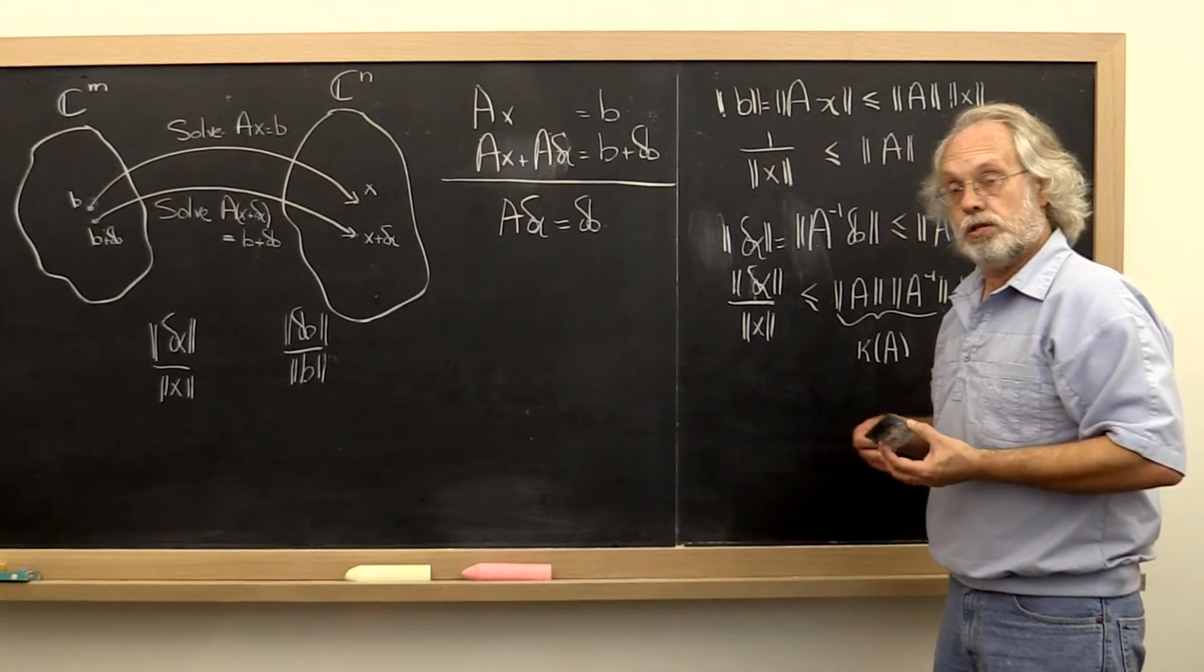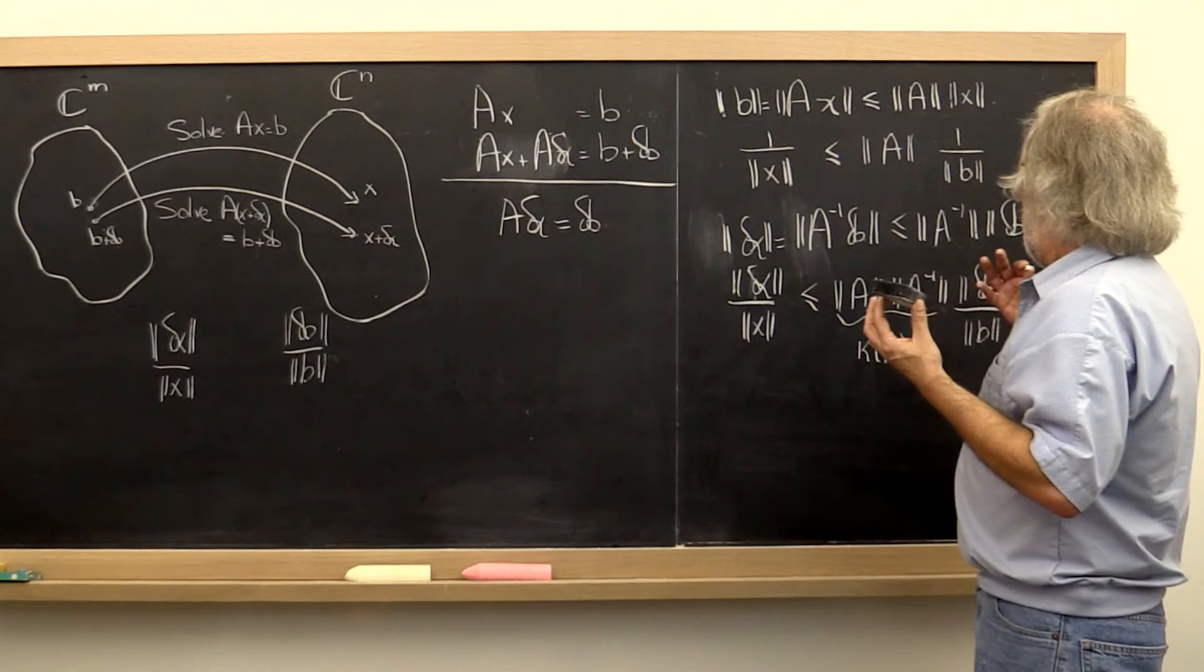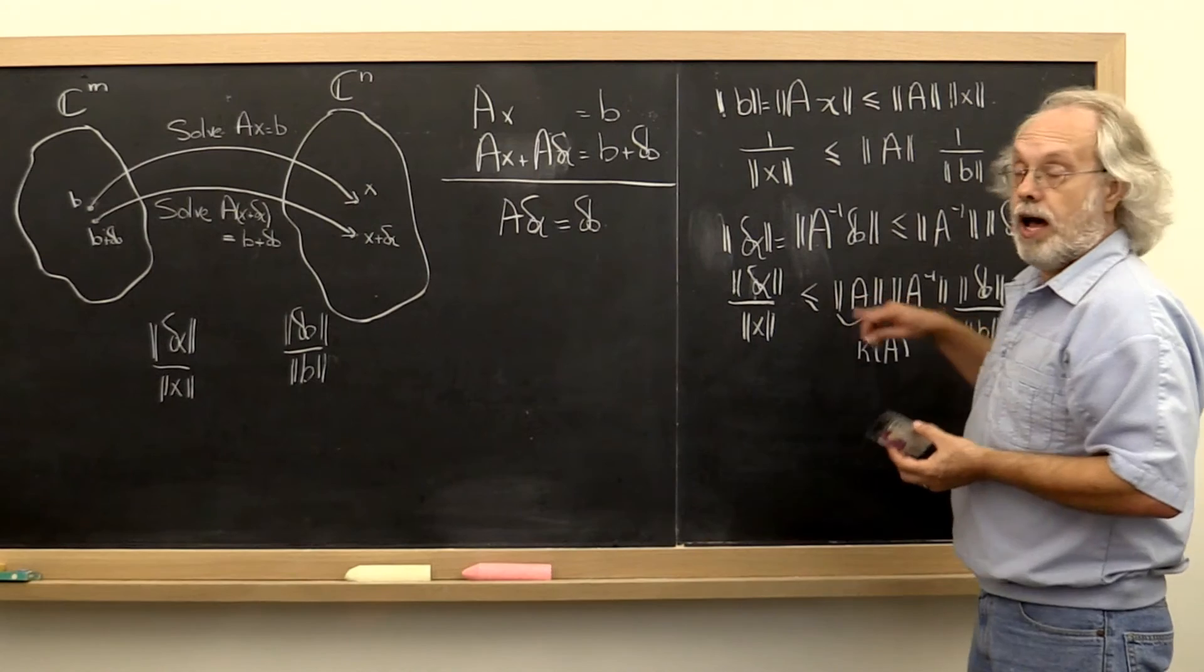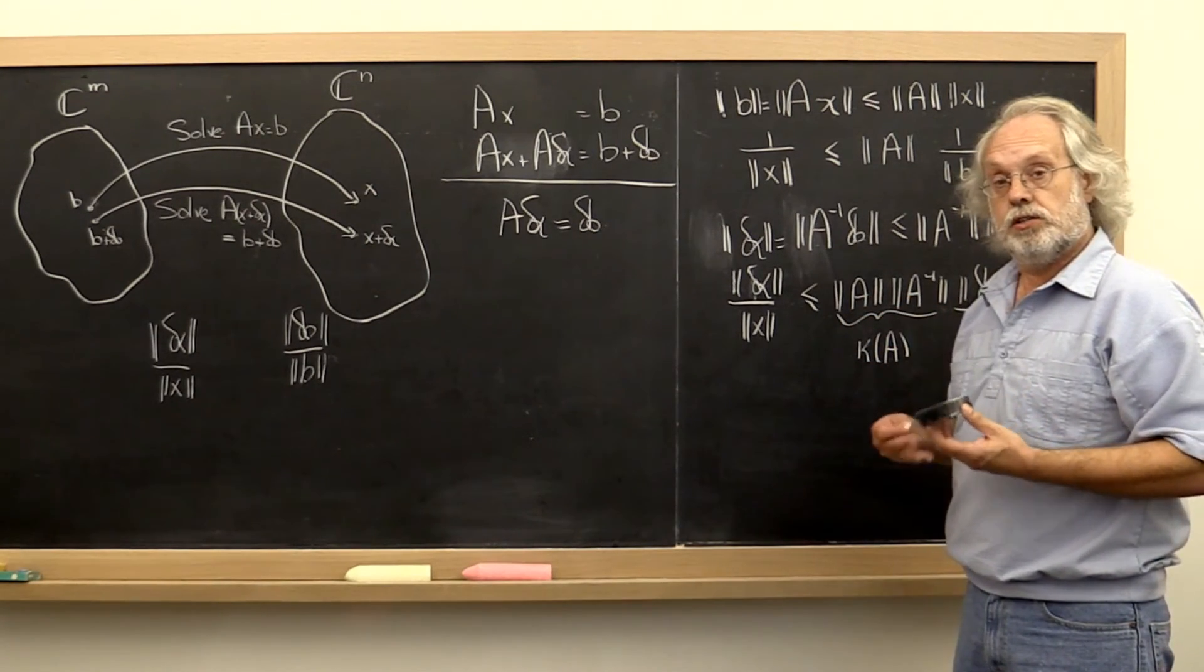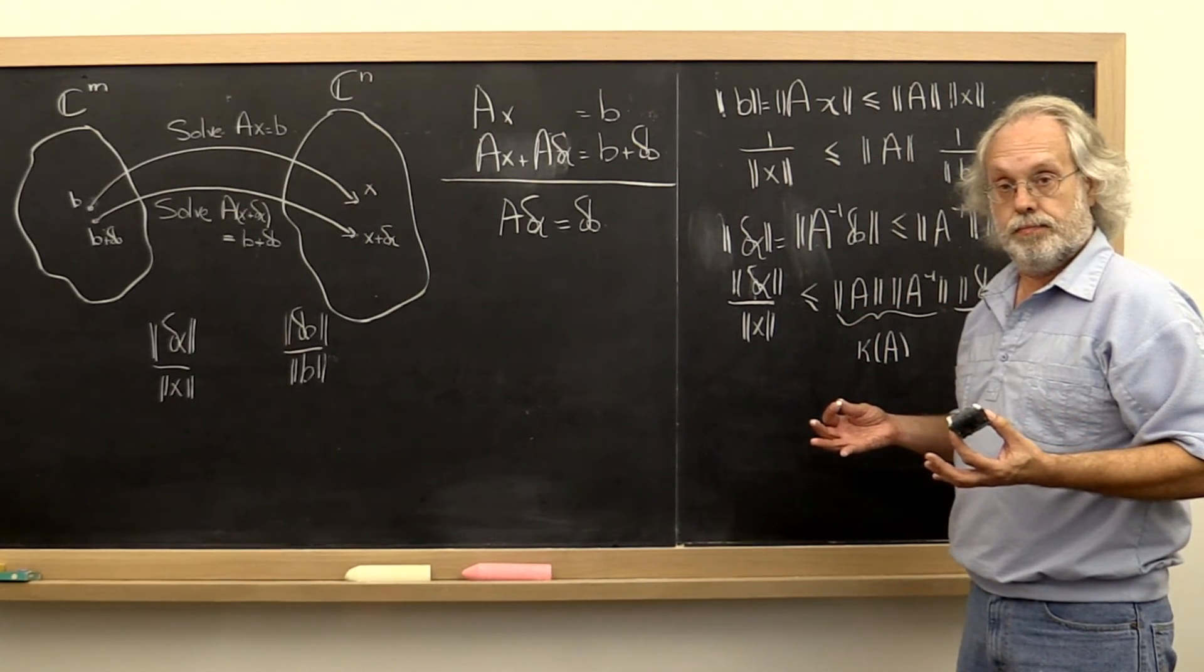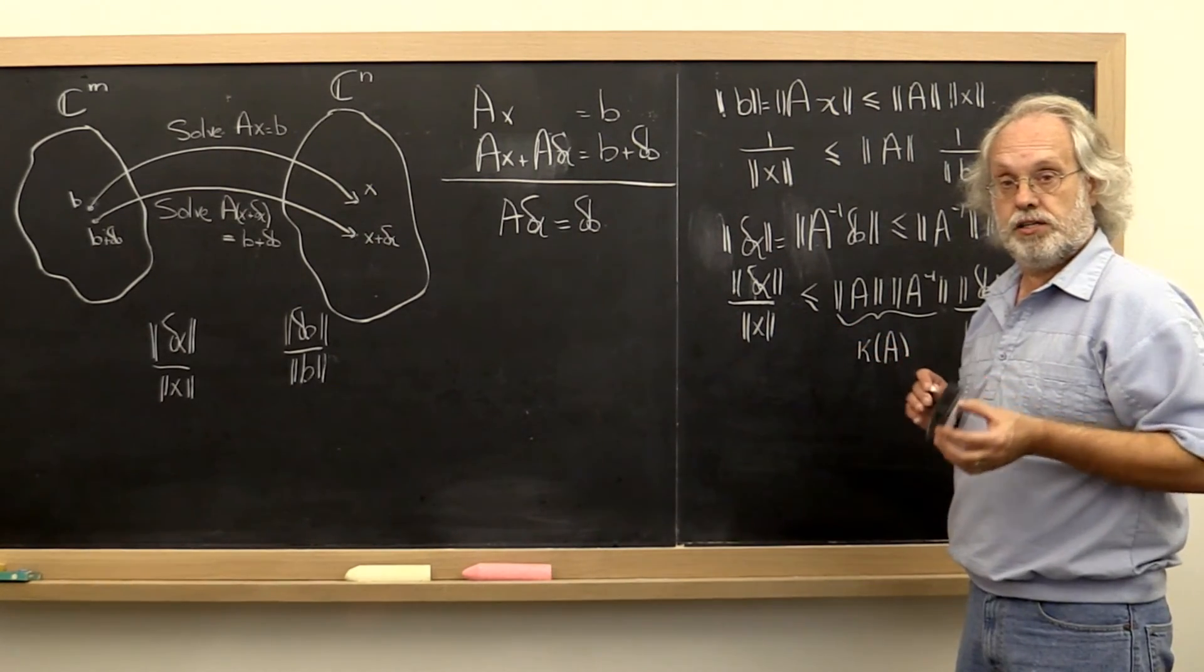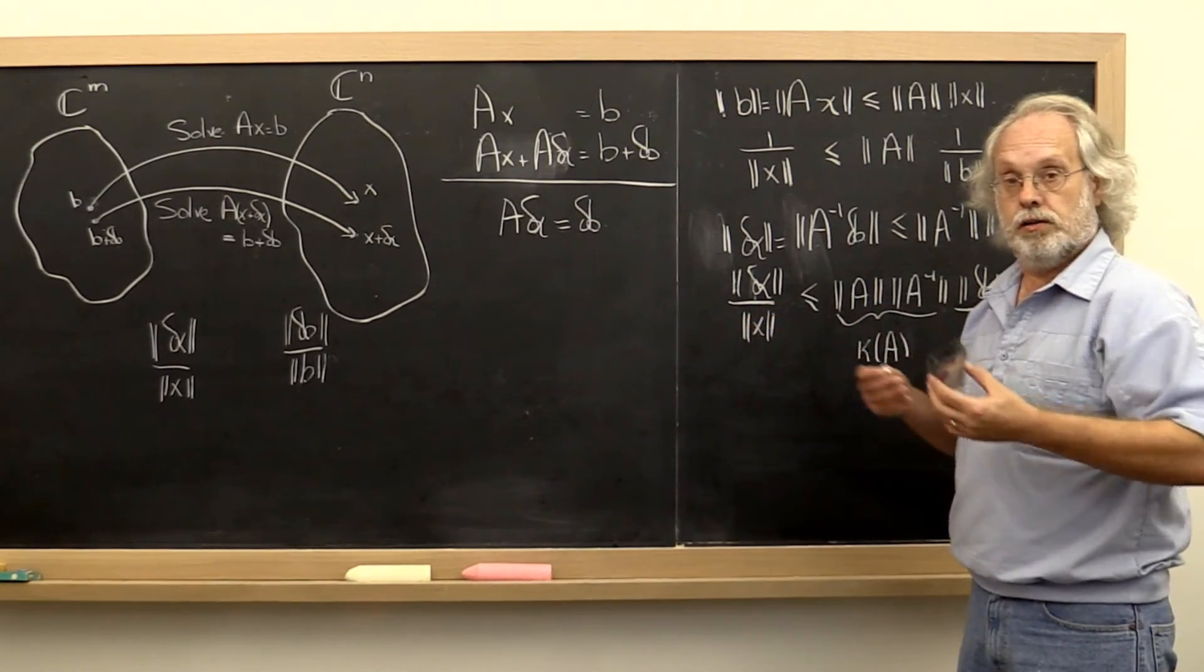Later in the course, you're going to find out that the condition number of A depends on how close A is to being singular. So all of these things will start falling in place as we move on through the course.